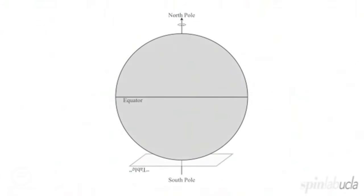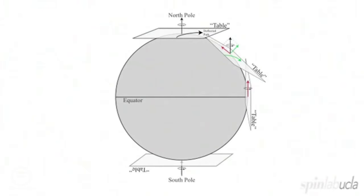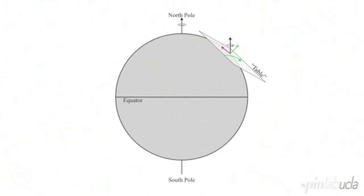If we put the table down at the south pole, the table is now upside down with respect to the rotation vector — the rotation vector now points into the table, whereas at the north pole it's pointing out. So there's still a very strong Coriolis deflection there, but it's left-handed — off to the left instead of off to the right. Coriolis goes from strong at the poles to zero at the equator to strong again at the other pole. In the experiments from here on out, we can think of all our experiments as occurring at some latitude away from the equator where Coriolis exists and is roughly constant.